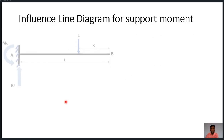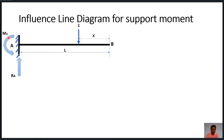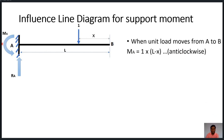Now for the influence line diagram for support moment at A, we again consider a unit load moving from A to B with distance x measured from the right-hand side. Taking summation of moments about point A = 0, the unit load at distance (L - x) from A creates a clockwise moment equal to 1×(L - x). To balance it, MA = 1×(L - x), which is anti-clockwise in nature.